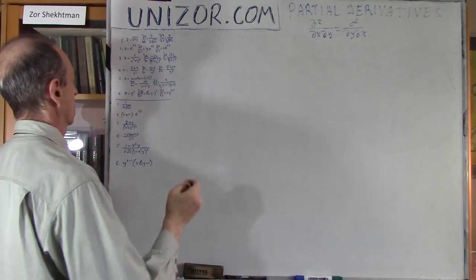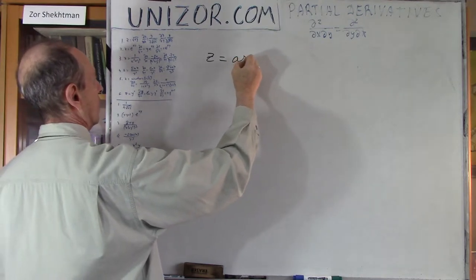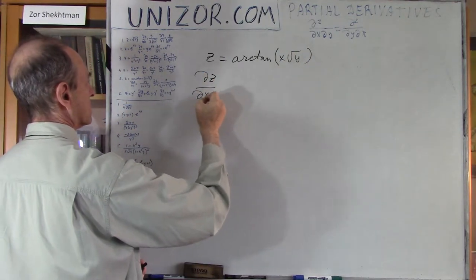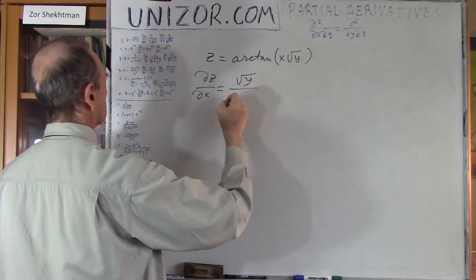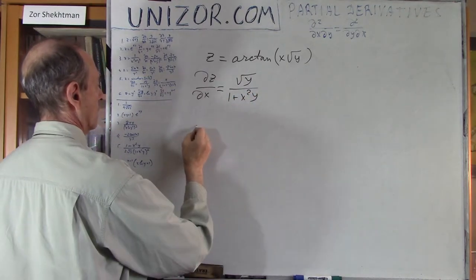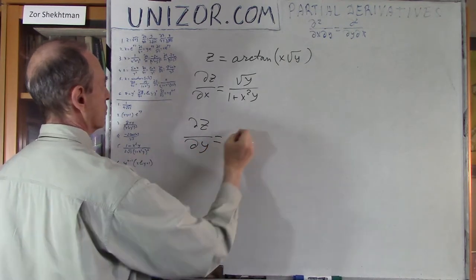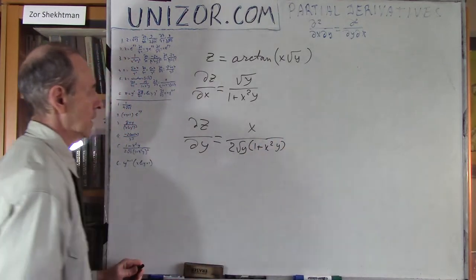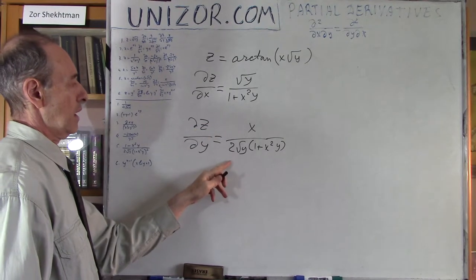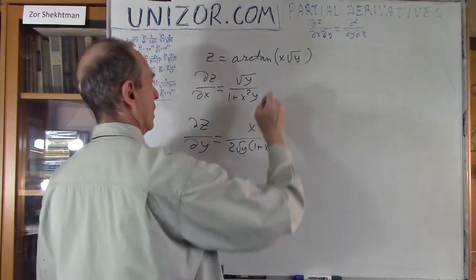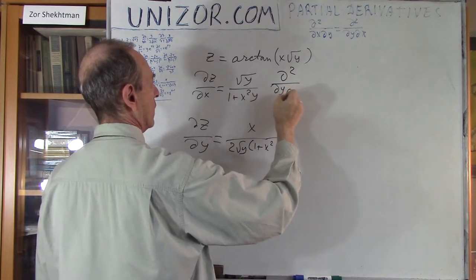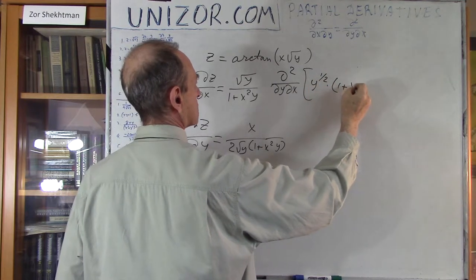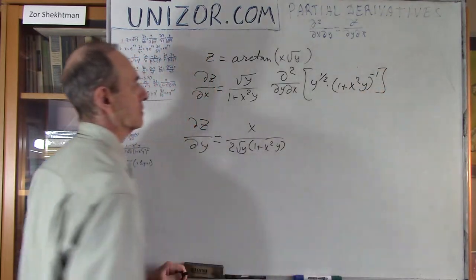This next one is much more difficult, so we have to be very careful. z equals arctan(x times square root of y). My first derivative by x is square root of y divided by (1 + x²y). My first derivative by y is x divided by (2 square root of y times (1 + x²y)). Now we differentiate the first by y and the second by x and compare. I rewrite dz/dx as y to the power one-half times (1 + x²y) to the power of minus 1.